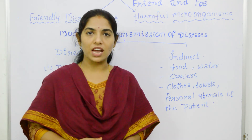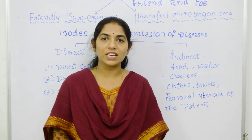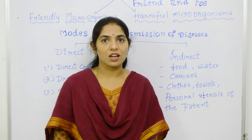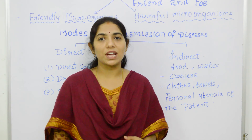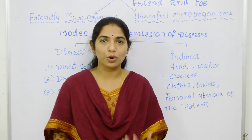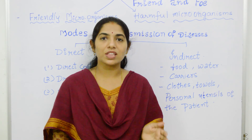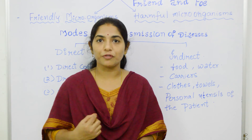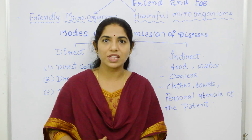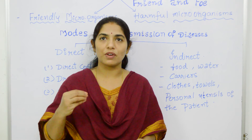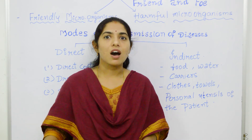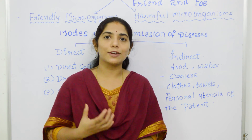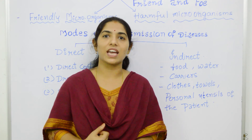For example, house flies generally feed and multiply in garbage, human excreta, or animal excreta — favorable places for disease-causing microorganisms to grow. When house flies sit on that garbage for feeding, disease-causing microbes stick to their feet or hair. When these flies move to food or water, they contaminate it. When this contaminated food and water are consumed by a healthy person, they generally become sick.